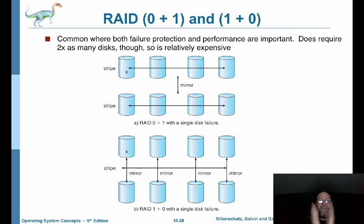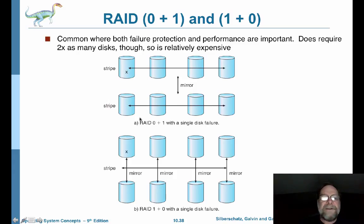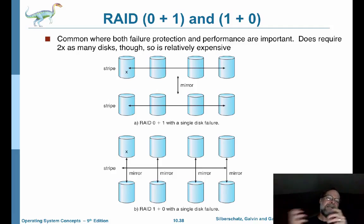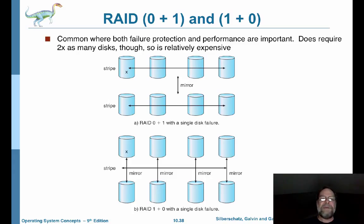RAID 0+1 and 1+0: the basic idea is you're striping your data as before, and then copying that striped data to create a mirrored backup. You can also do it the other way, mirroring individual pairs and then striping across those pairs. This requires twice as many disks as you'd normally have, but you get the best of both worlds — good speed from striping and good protection from redundancy through mirroring.